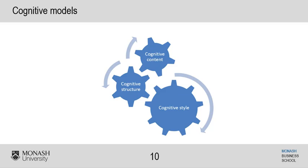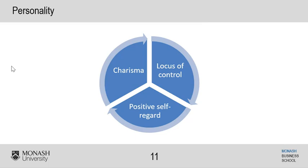The last thing to touch on is executive personality, which we can break down into three key parts. The first is charisma, the second is locus of control, and the third is positive self-regard. We don't look at them as entirely separate aspects, but rather how they combine together to create the overall personality of the executive. There are other aspects of personality that come into play, but researchers found these three key areas are the most important.